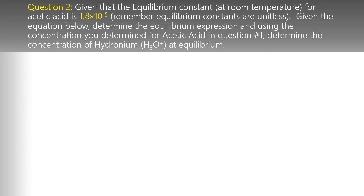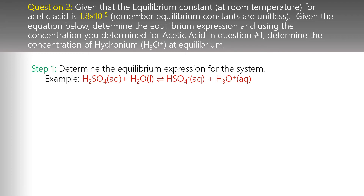Equilibrium constants for weak acids can be written — and remember, those are unitless. Given the equation below, determine the equilibrium expression, and use the concentration you determined for acetic acid in question one to find the concentration of hydronium at equilibrium. The lab gives you the acid dissociation equation for acetic acid, but I'm going to use this one: H₂SO₄ plus water yields HSO₄⁻ plus hydronium.